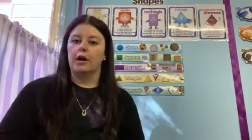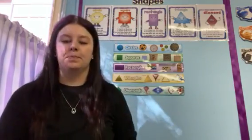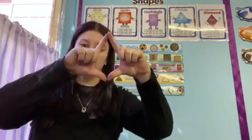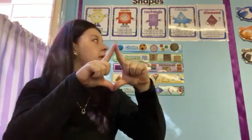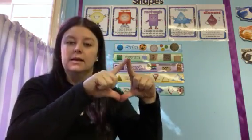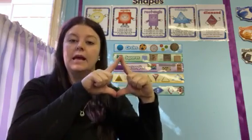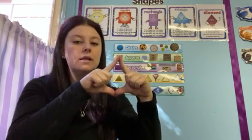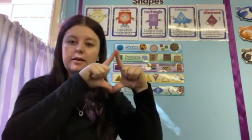And the last shape we are going to look at today is our diamond shape. You can use your fingers and make a diamond shape. A diamond's like a kite, a diamond's like a kite. It has four sides, they're all slanty. A diamond's like a kite.